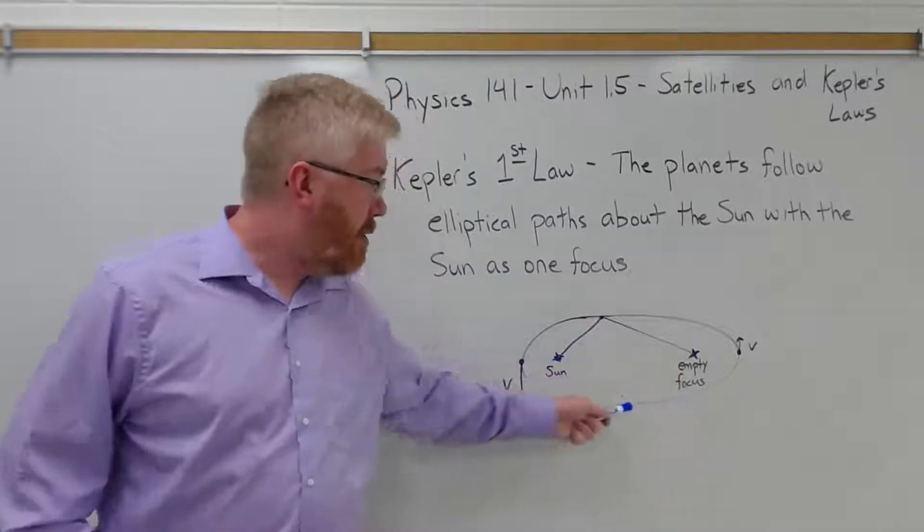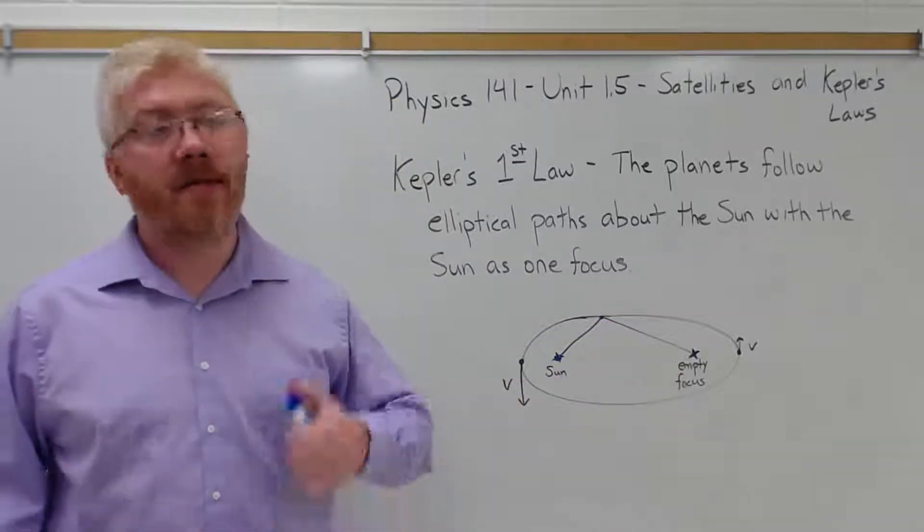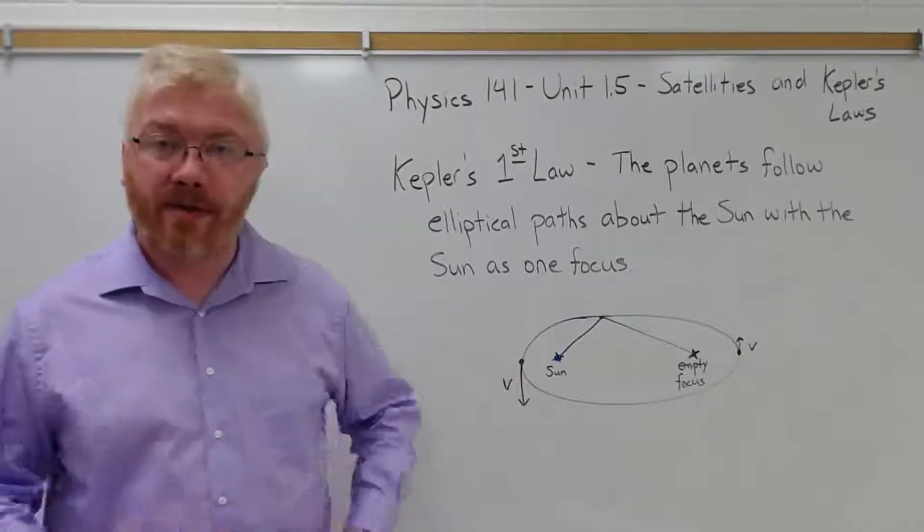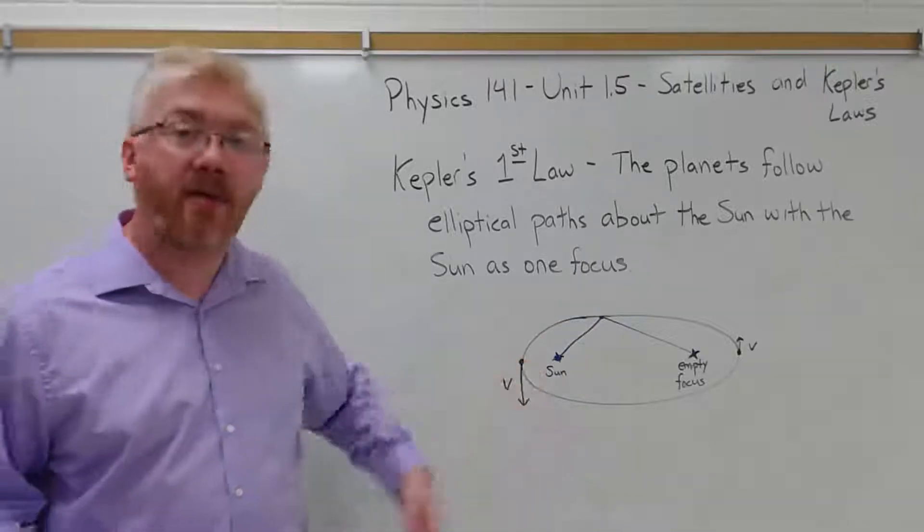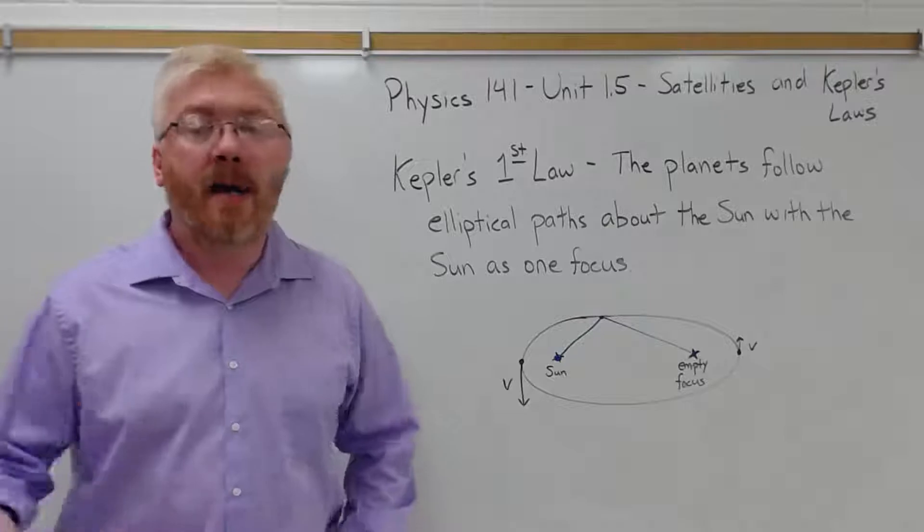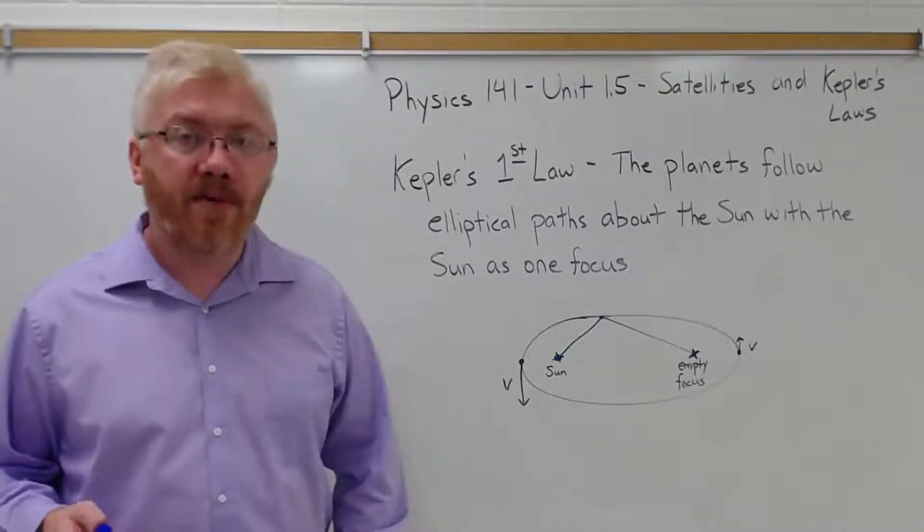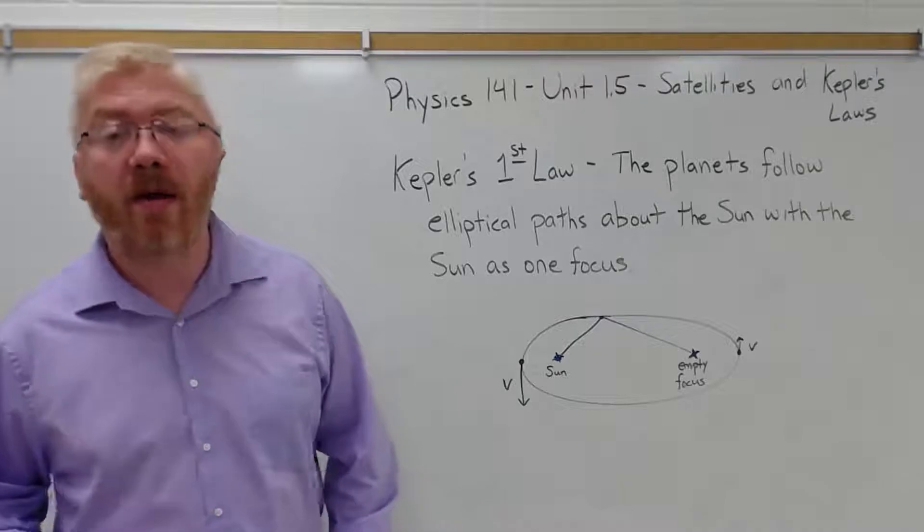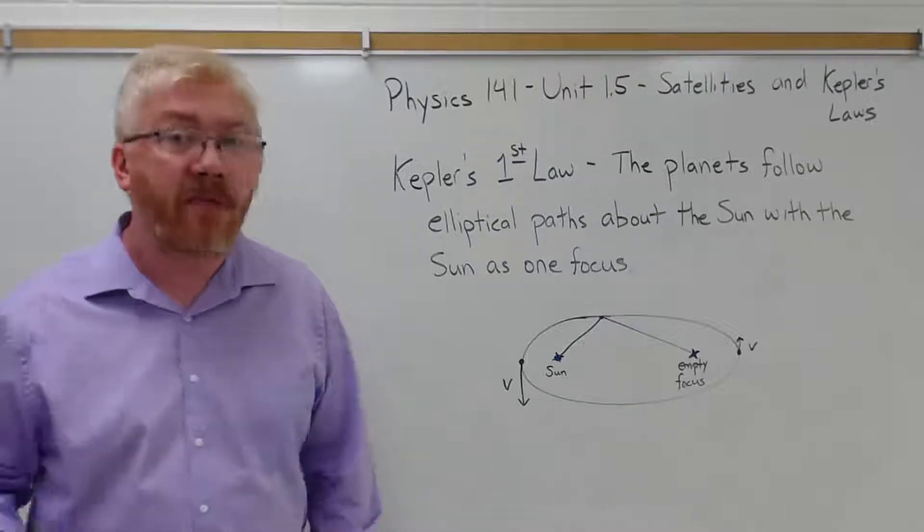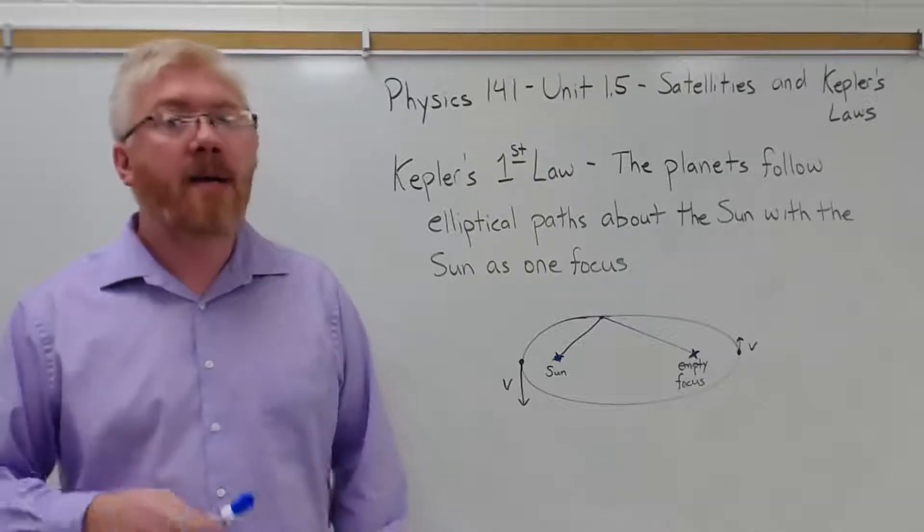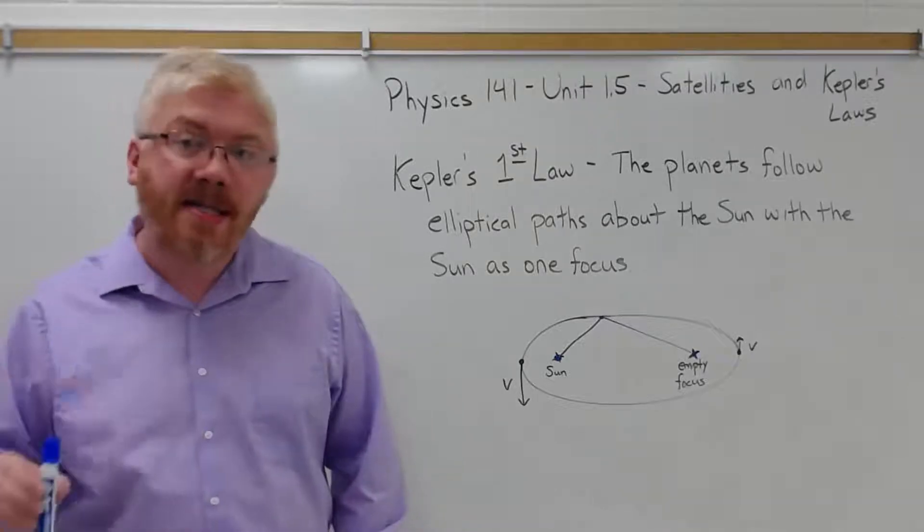So we have here planets moving in elliptical orbits around the Sun. That means that there's a time where the Earth is a little bit closer to the Sun, and the Earth is a little bit further away. The Earth is on average about 93 million miles away from the Sun, 150 million kilometers. Sometimes it's a few million kilometers closer, sometimes it's a few million kilometers further away. This has nothing to do with the seasons.